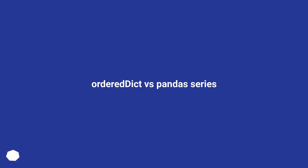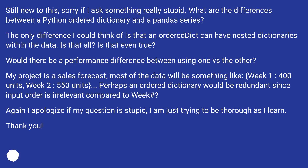Still new to this, sorry if I ask something really stupid. What are the differences between a Python OrderedDict and a pandas Series? The only difference I could think of is that an OrderedDict can have nested dictionaries within the data. Is that all? Is that even true? Would there be a performance difference between using one versus the other?